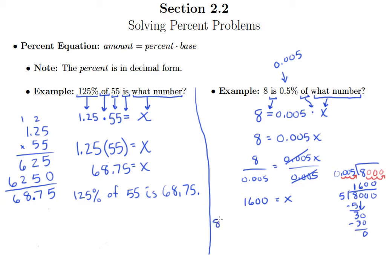So it turns out that 8 is 0.5% of 1,600. And again, this makes sense because 8 is much smaller than 1,600, but 0.5% is a very small percentage. So I think we can feel fairly comfortable about our answer here.